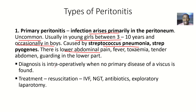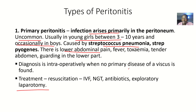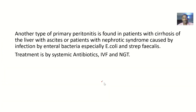Diagnosis is made intraoperatively — that is, when you do an exploratory laparotomy. During the laparotomy, you find that there is no primary disease of a viscus, meaning no organ in the abdomen is causing the peritoneum to become inflamed. Treatment includes resuscitating the patient, IV fluids, nasogastric tube, and antibiotics.